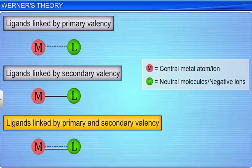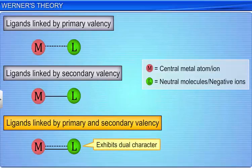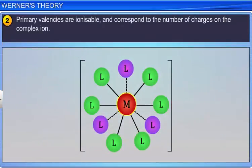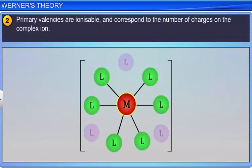The second postulate is that primary valencies are ionizable and correspond to the number of charges on the complex ion. Primary valencies apply equally well to simple salts and to complexes and are satisfied by negative ions.